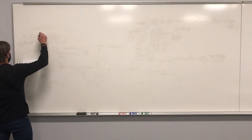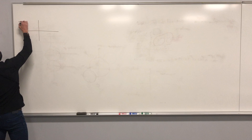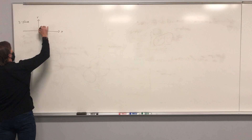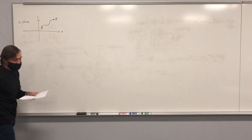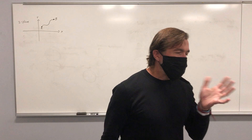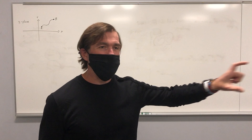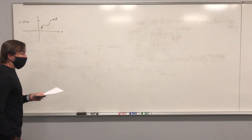Let us consider the z-plane. We can coordinate it with x and y, and then consider a contour along which we want to perform the integral. Remember, a complex space is two-dimensional, so you could do an integral over both the real and imaginary variables, but we want to start with a complex integral over a single complex variable along an arbitrary contour.